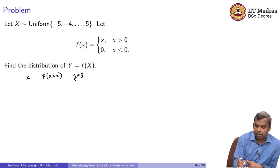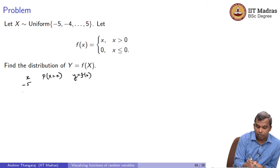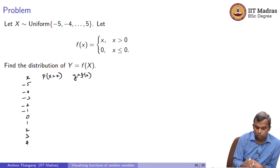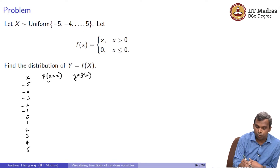Y equals f(X). The table has X values: minus 5, minus 4, minus 3, minus 2, minus 1, 0, 1, 2, 3, 4, 5 — there are 11 values here. Since X is uniform, each probability is 1/11.